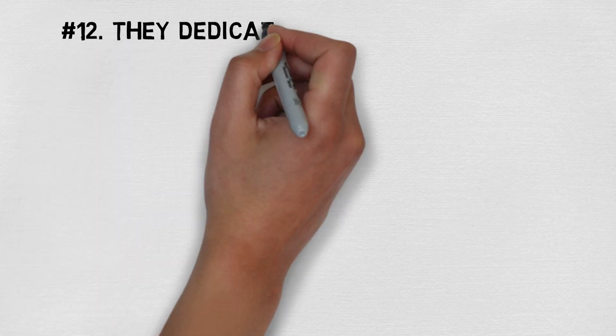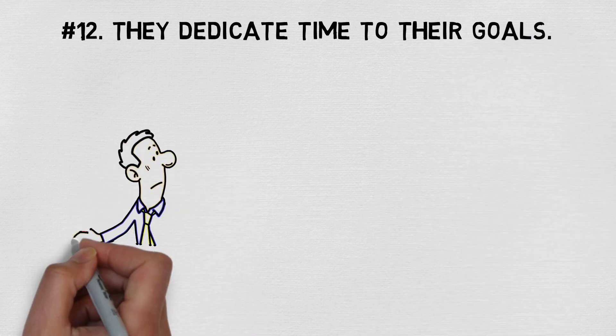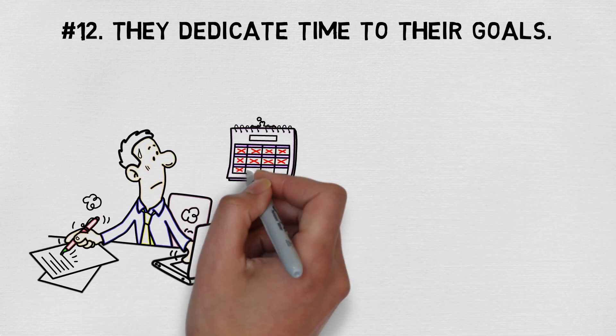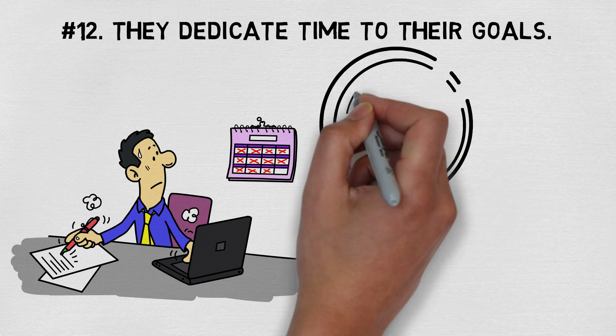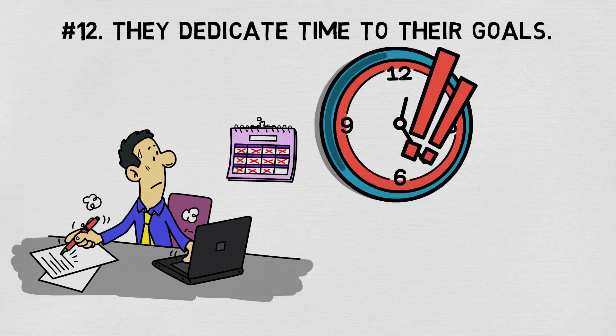Number twelve, they dedicate time to their goals. Intelligent people know what matters and they will be sure to focus on those things. Their agenda will always carve time out towards working on themselves and their goals.